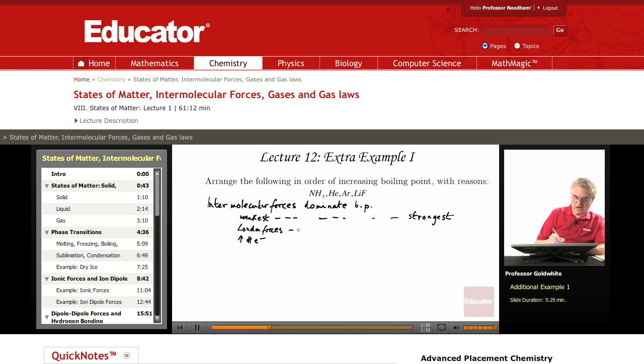Then we have dipole-dipole forces. Let's make this explicit. London forces are weaker than dipole-dipole forces, of which the strongest are hydrogen bonds. These are weaker than ion-dipole forces. And the strongest forces we're likely to encounter are ion-ion.